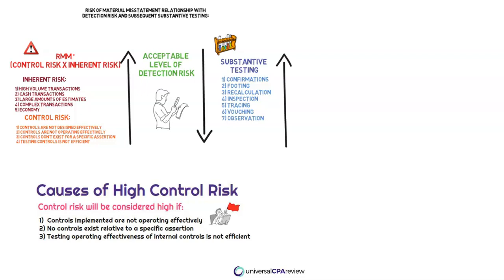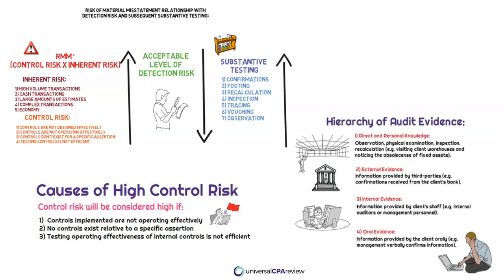There are seven different levels of substantive tests, but ultimately it comes down to the auditor's judgment in determining what type of procedures would be more effective to gain better audit evidence. So if we need to perform substantive testing procedures that are more effective, it's really going to depend on the specific line item or the cycle. As you can see in the hierarchy of audit evidence, we should perform procedures that go in this order.